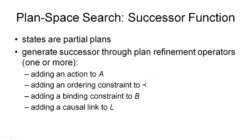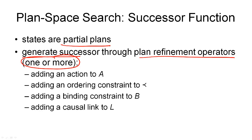The successor function we need to define our search problem is given by the plan refinement operations we've seen previously. We generate successors by applying our plan refinement operators. We can apply one or more of these operators at the same time to constitute one step in our successor function. The reason we want to apply several operators at the same time is to keep our partial plans consistent. For example, when we add a causal link, we should also add an ordering constraint at the same time, in the same step, to keep our plan consistent.